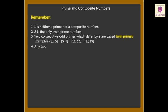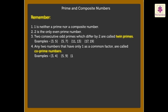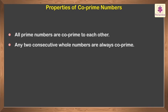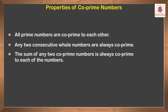Any two numbers that have only one as a common factor are called co-prime numbers. Examples include 3 and 4, 5 and 9, 11 and 20. Properties of co-prime numbers: Any two consecutive whole numbers are always co-prime. The sum of any two co-prime numbers is always co-prime to each of the numbers.